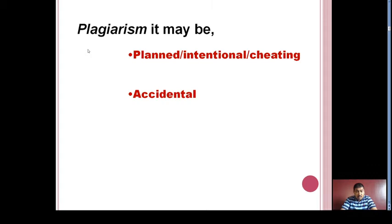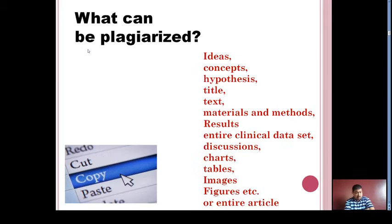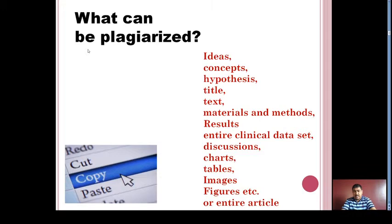Before heading to the next point, we will see what can be plagiarized. Anything can be plagiarized, but with respect to article publication, it may be ideas, concepts, hypothesis, title, text, material and methods, or even results and discussion. Also, entire clinical datasets, discussion, charts, tables, images, figures, or even an entire article can be plagiarized.